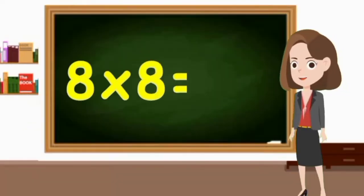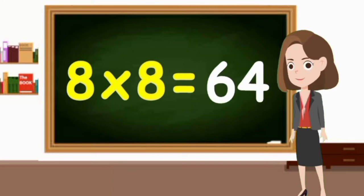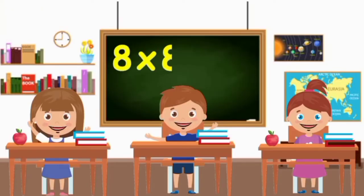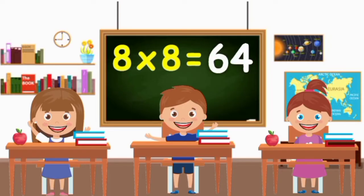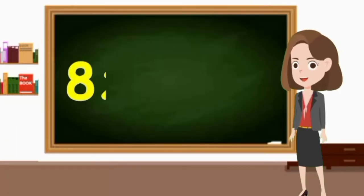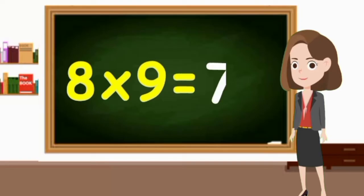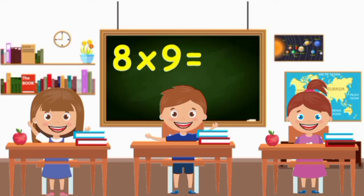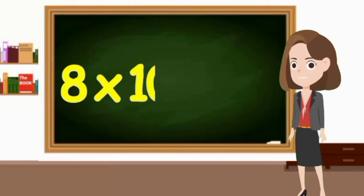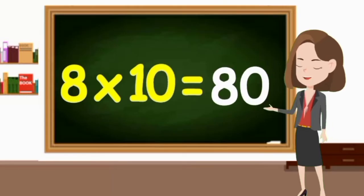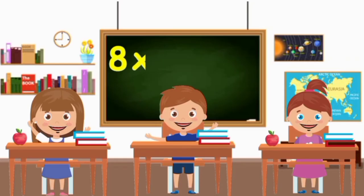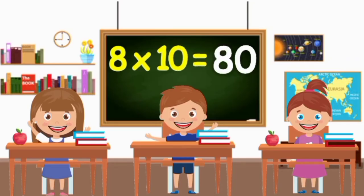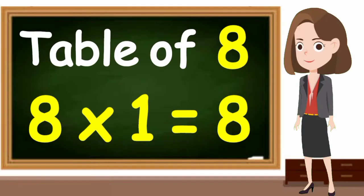Eight sevens are fifty-six. Eight eights are sixty-four. Eight nines are seventy-two. And eight tens are eighty. So we learned the multiplication table of eight.